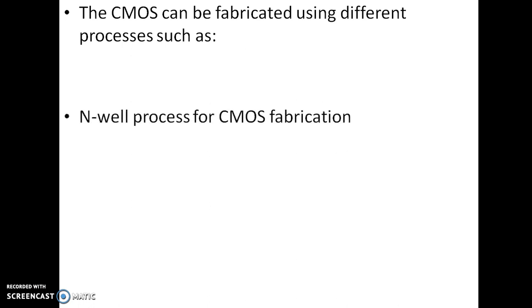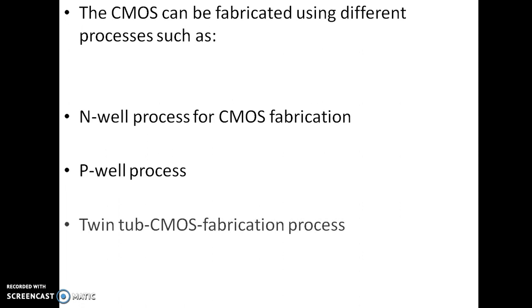CMOS can be fabricated using different processes. First is the N-well process for CMOS fabrication — in this process we create an N-well in P-type substrate. Second is the P-well process — in this case we create a P-well in N-type substrate. Third is the twin-well CMOS fabrication, where we create both N-well and P-well; in the N-well we implement P-type MOSFET and in the P-well we implement N-type MOSFET.